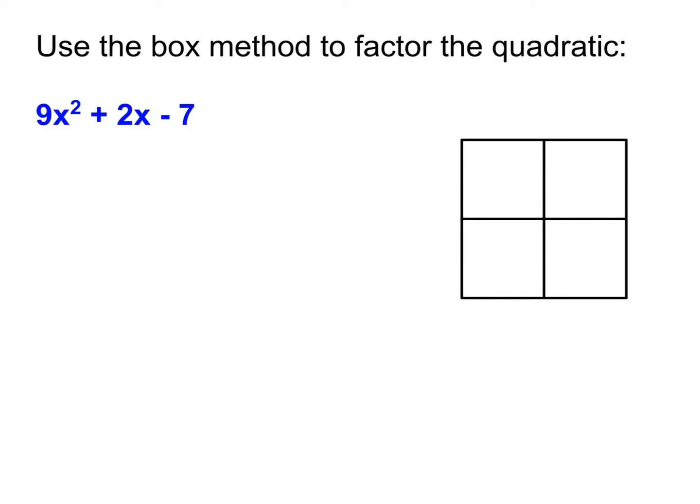And now I'd like you to try doing that process on your own with this one. So write down the problem, set up the box, and go ahead and work it through. So remember your first step: first term in the first box, last term in the last box. So that's what your setup should be looking like. And then you use that trying to figure out what can those other two boxes be that'll add to 2x. And you'll notice in this case, we're multiplying to a negative 7. So there's going to be a positive and a negative.